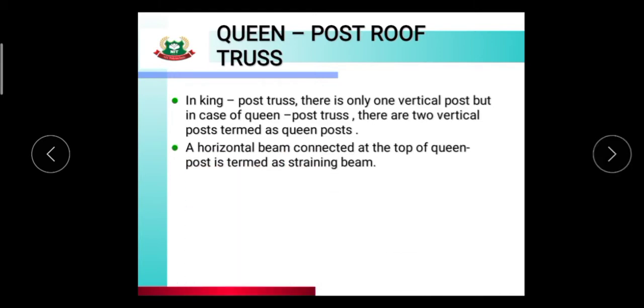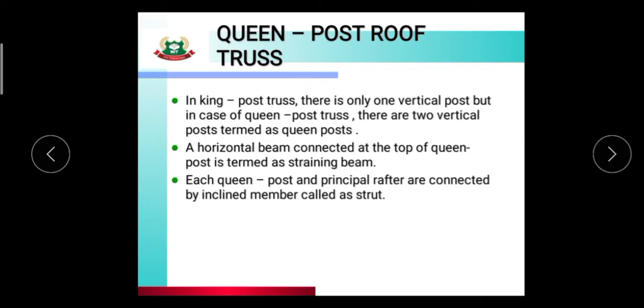The two vertical posts are termed as queen posts. A horizontal beam connected at the top of the queen post is termed as a straining beam. Each queen post and principal rafter are connected by an inclined member called a strut. Queen post roof trusses are more suitable for span range from 8 meter to 12 meter.